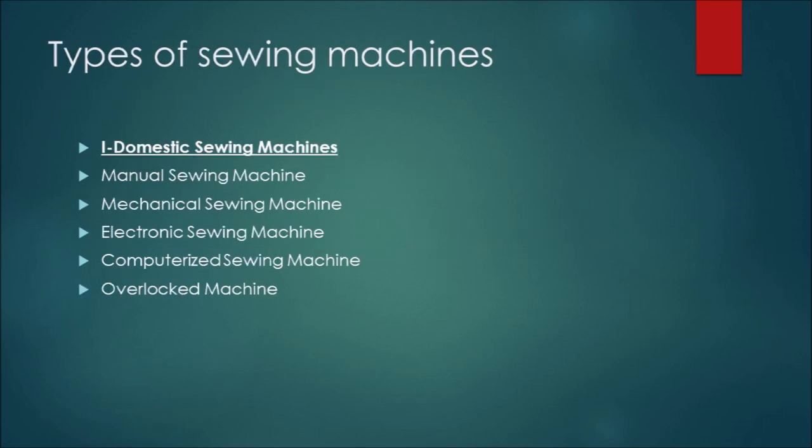My name is Mohamed Belal. I'm going to talk about the types of domestic sewing machines. Number one: manual sewing machine. This kind of machine is slow, simple, and doesn't need electricity.